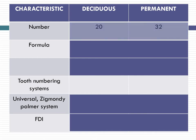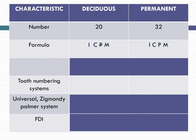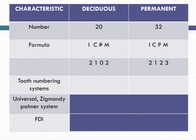The deciduous teeth are 20 in number and permanent teeth are 32 in number, so in total human beings have 52 teeth. The deciduous teeth do not have a premolar. The dental formula is 2102, which accounts for two incisors, one canine, and two deciduous molars. Whereas the permanent teeth has 2123 as the formula — two incisors, one canine, two premolars, and a molar in each quadrant.